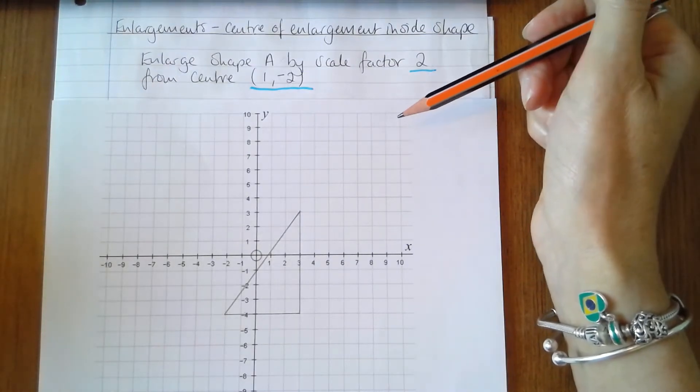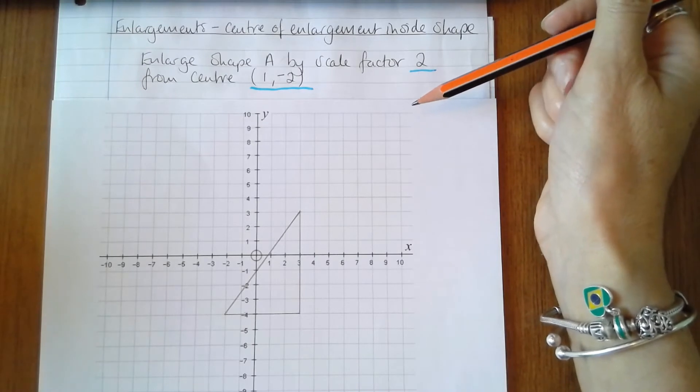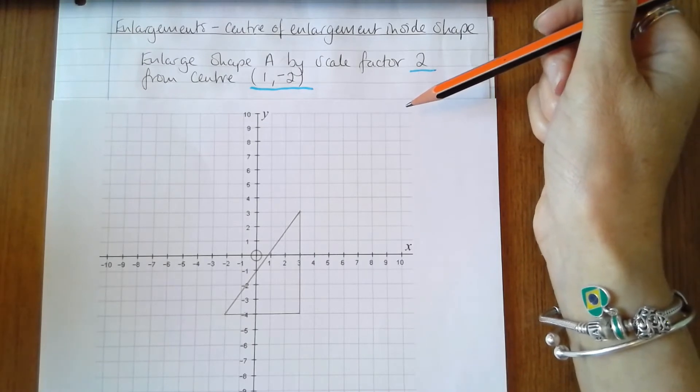In this question we're asked to enlarge shape A by scale factor 2 from centre 1, negative 2.